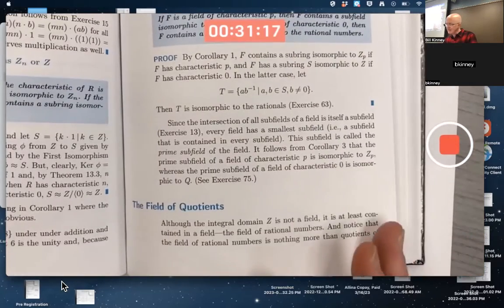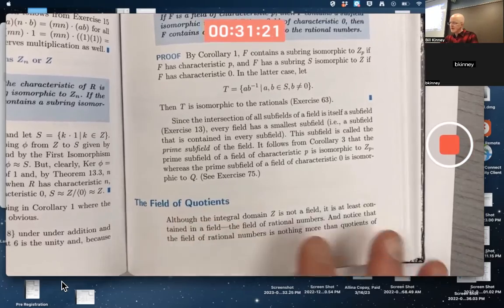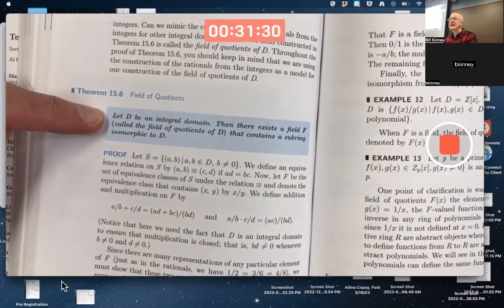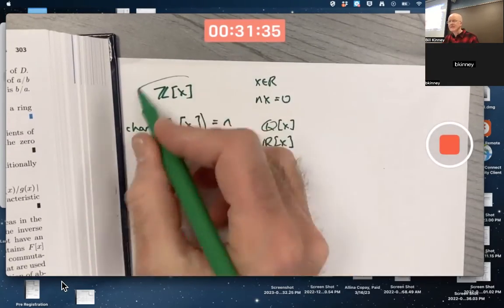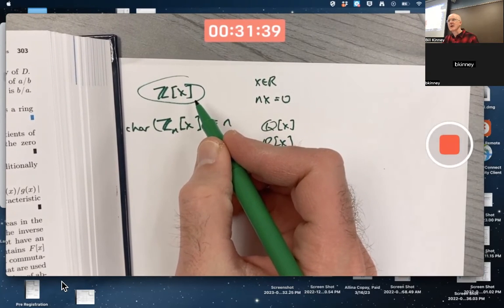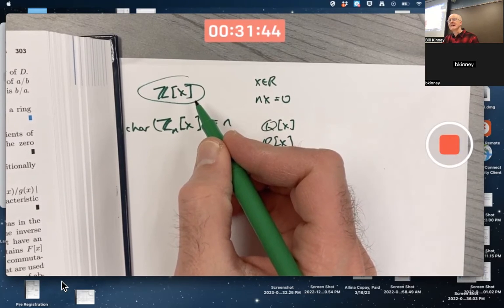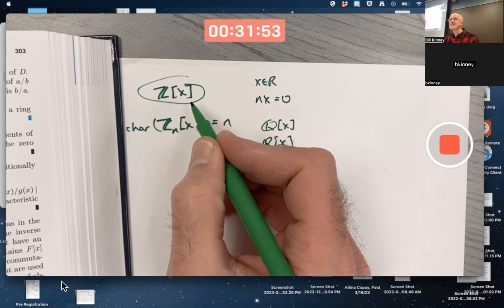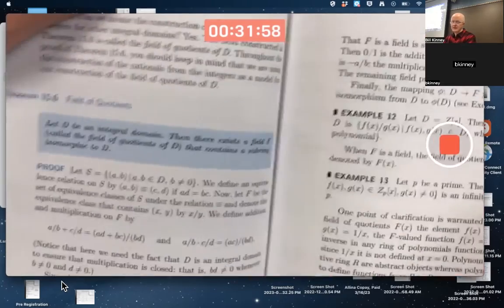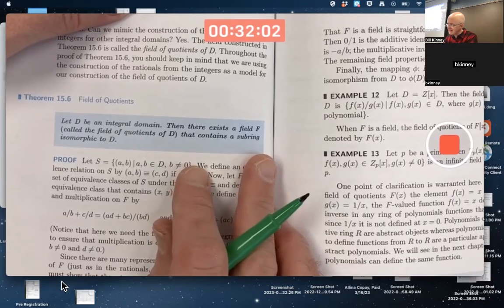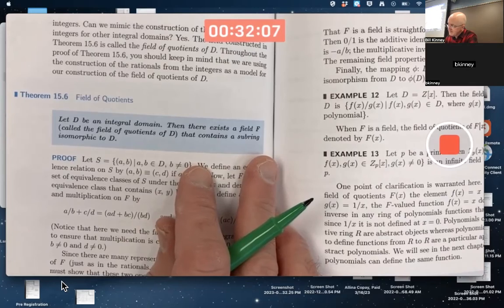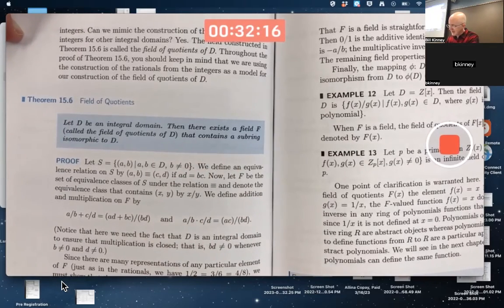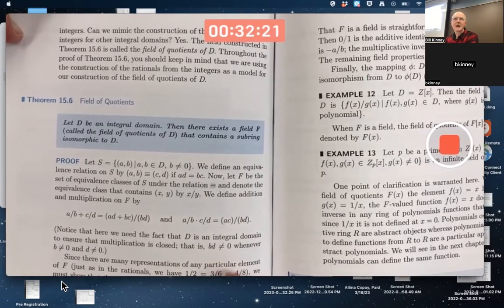And this last couple pages of chapter 15 starts talking about something called the field of quotients. What's the main theorem here? Let D be an integral domain like the integers, for example. What's an integral domain? Remind yourself. Commutative ring with unity in which every... that has no zero divisors, right? Not necessarily a field. In fact, this is not a field. No zero divisors, though. If D is an integral domain, then there exists a field F called a field of quotients of D that contains a subring isomorphic to D. You can always create fields using integral domains is the essence of what happens in this proof. And without going into details, essentially what you're doing is you're just creating fractions out of your integral domain elements.